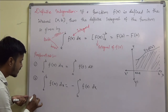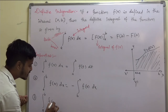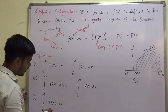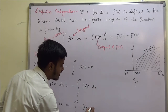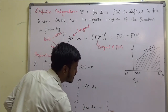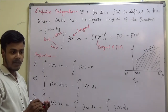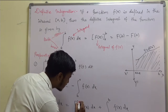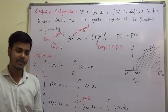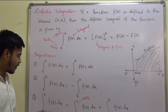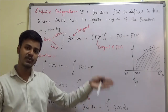The third property is widely used when you solve problems. It says: integral from a to b of f(x) dx equals integral from a to c of f(x) dx plus integral from c to b of f(x) dx. I call this the 'chalak' (clever) property — with its help you can break the interval from a to b into a to c and c to b.